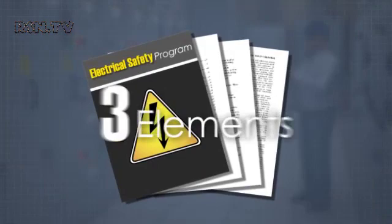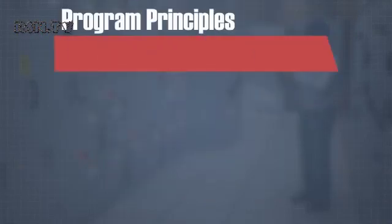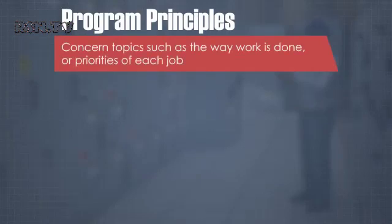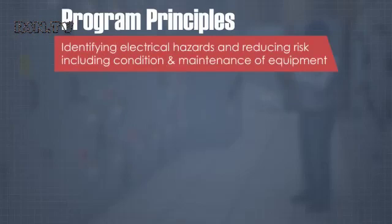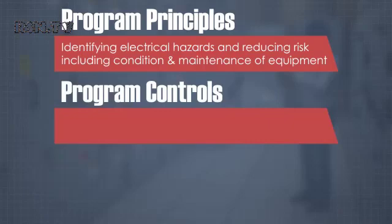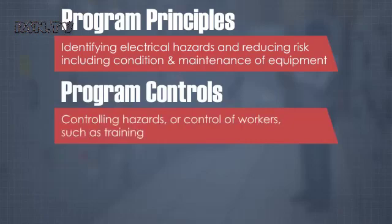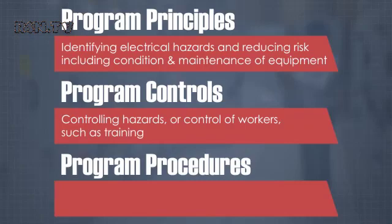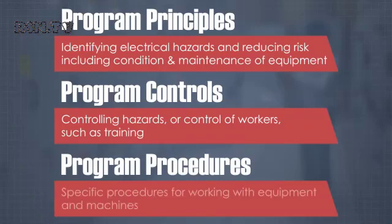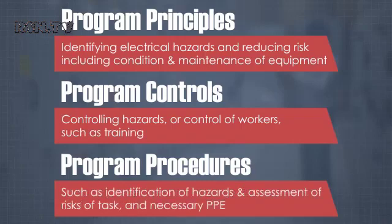An electrical safety program will have the following three elements. First, program principles — these concern topics such as the way work is done, the priorities of each job, identifying electrical hazards and reducing the associated risk, including condition and maintenance of equipment. Second, program controls — these include topics such as controlling hazards or the control of workers, such as training. And third, program procedures — this includes specific procedures for working with equipment and machines, such as identification of hazards, assessment of the risks of the task, and necessary PPE.